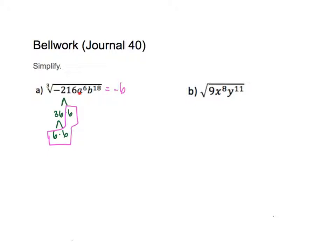Now let's look at a to the sixth power. For variables, all you do is take the exponent and divide it by the root. So 6 divided by 3 gives me a squared. Then b is to the 18th power: 18 divided by 3 gives me 6, so b to the sixth power. And that is my final answer.